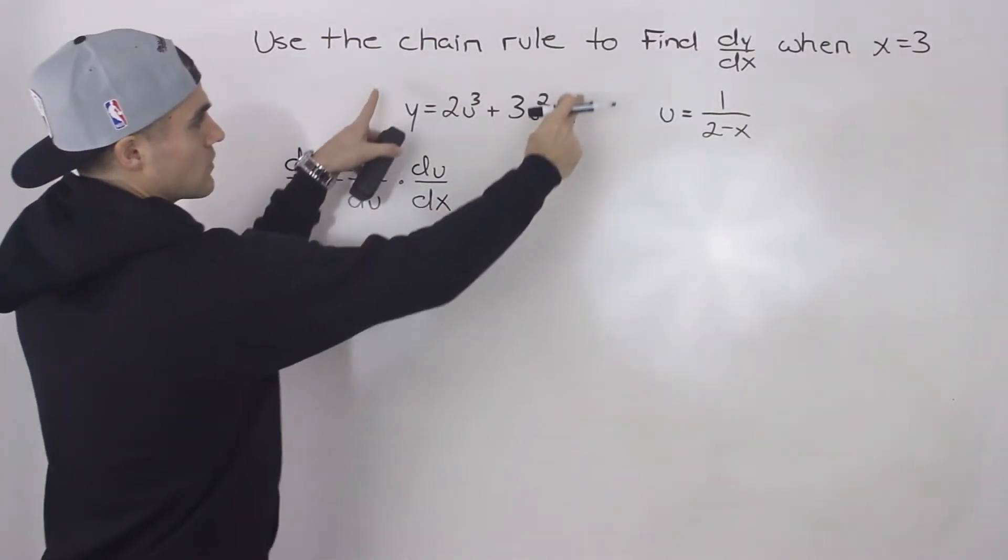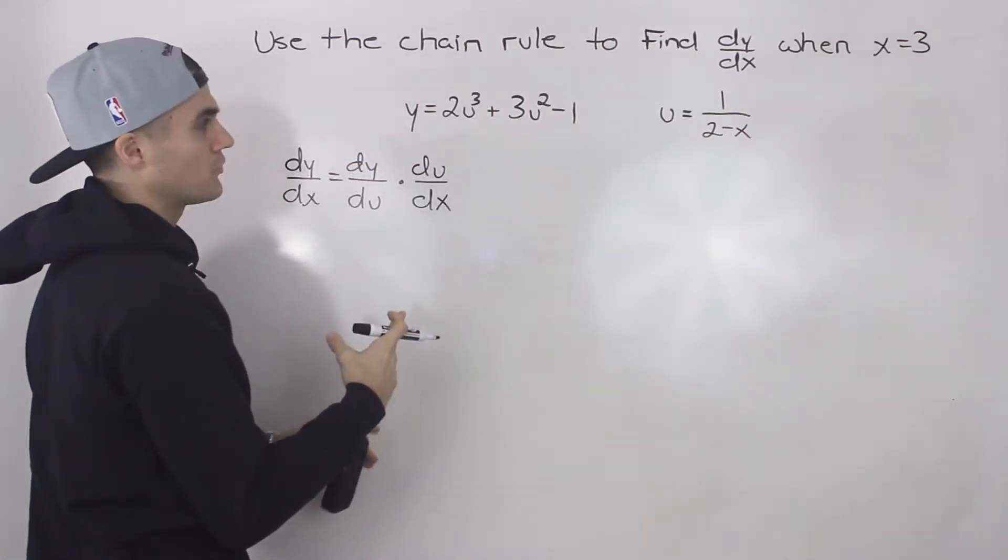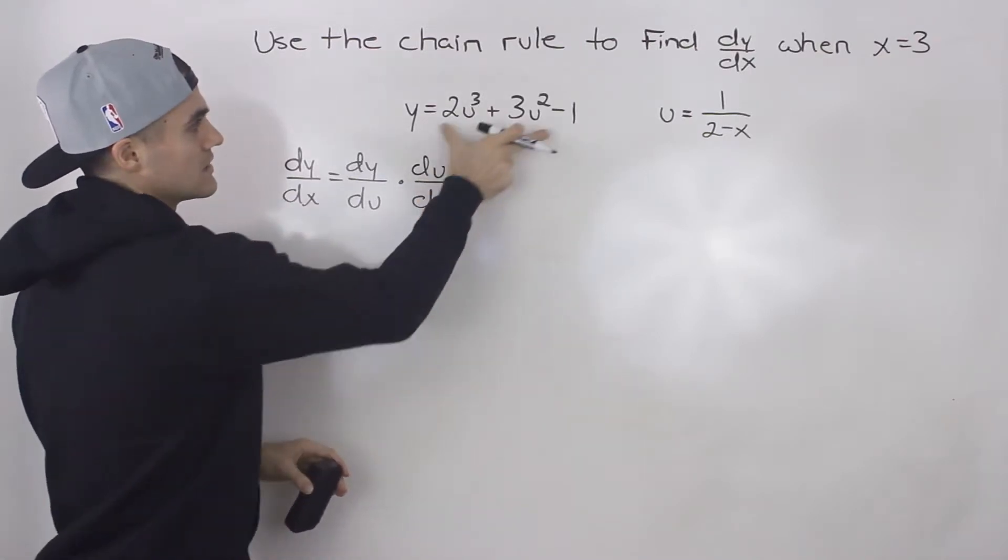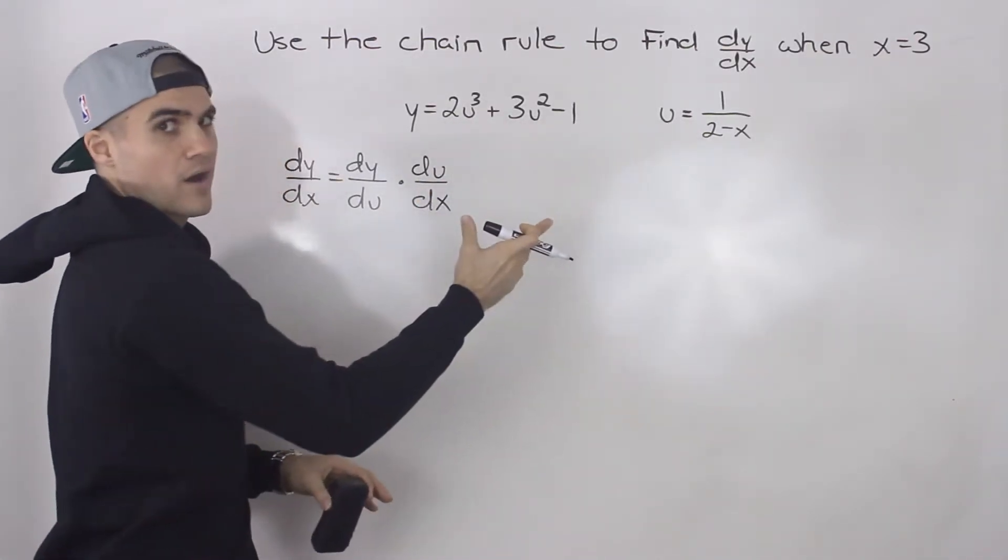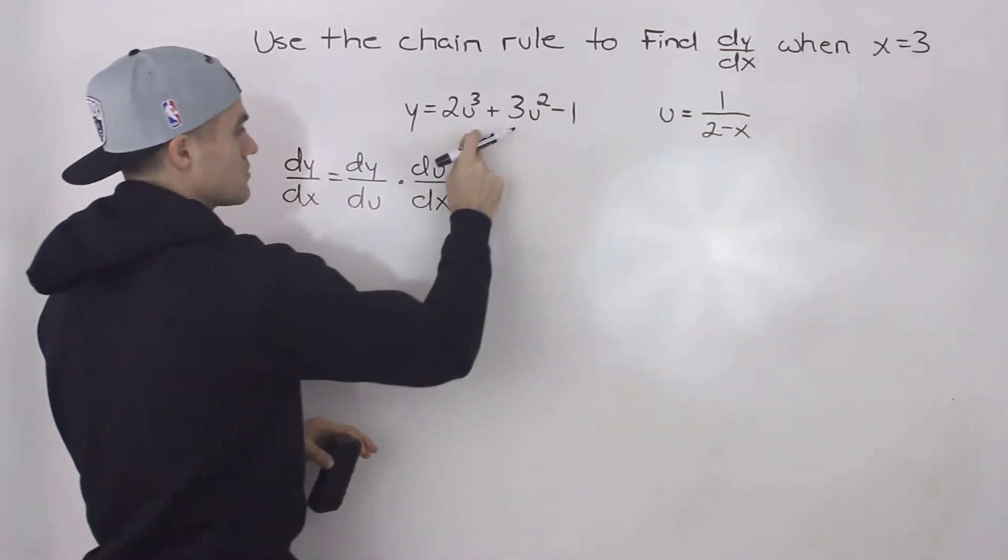So what you can do is you could take the derivative of this separately and then just multiply them. And I think that's easier to do because these functions are easier to derive than if we were to make one function by plugging this into here.